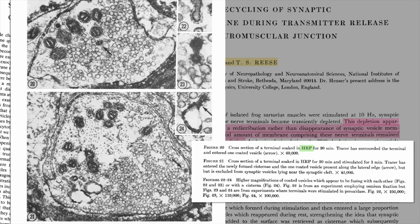These images can be a bit confusing though, because of the fact that mitochondria also appear black in electron micrographs, here shown in blue. Anyway, as you can see in figure 20, when the terminal was soaked in HRP for 30 minutes, the compound surrounded the terminal and the scientists were even able to capture a synaptic vesicle with HRP in it, here shown by the green arrow.